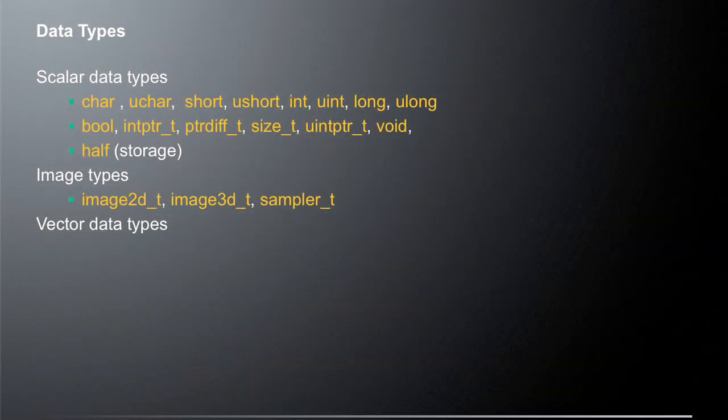Let's look at some of the different data types. There are scalar data types with the very obvious types you would expect: int, short, long, u-long, and other types. There's also a half type, but that's really for storage and not necessarily for processing. There are also image types: image2D, image3D, and sampler — those are for storing data into an image and sampling from an image. And then there are also vector types.